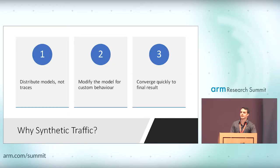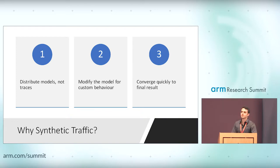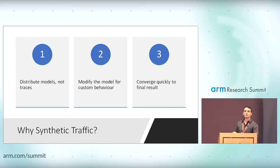Why synthetic traffic? Synthetic traffic allows us to distribute models instead of traces. Sometimes those traces are proprietary, and sometimes they are multiple gigabytes large, making it difficult to share them. This way, we can distribute models instead. And if you have the model, you could potentially modify it — for example, if Arm tells you this is how a VPU behaves for a given workload, you could say: what if I wanted to increase the number of reads or increase the data size with each message? You could tune the model to what you want to see.